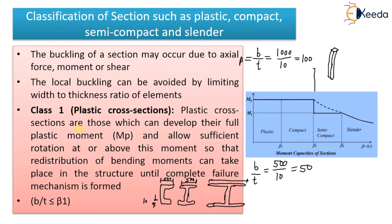In plastic cross sections, the moment generated in that section will reach its full capacity, and sufficient rotation will also be allowed. That is your plastic cross section, also known as Class 1. For this, b/t must be less than or equal to beta 1. You should remember this diagram — it should be drawn if asked in an exam.